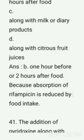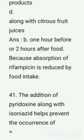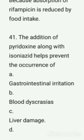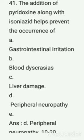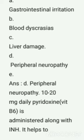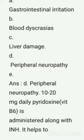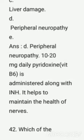Question number 41: The addition of pyridoxine along with isoniazid helps to prevent the occurrence of — options are: A) gastrointestinal irritation, B) blood dyscrasia, C) liver damage, D) peripheral neuropathy. Correct answer: option D — peripheral neuropathy. 10 to 20 mg daily of pyridoxine (Vitamin B6) is administered along with INH; it helps to maintain the health of nerves.